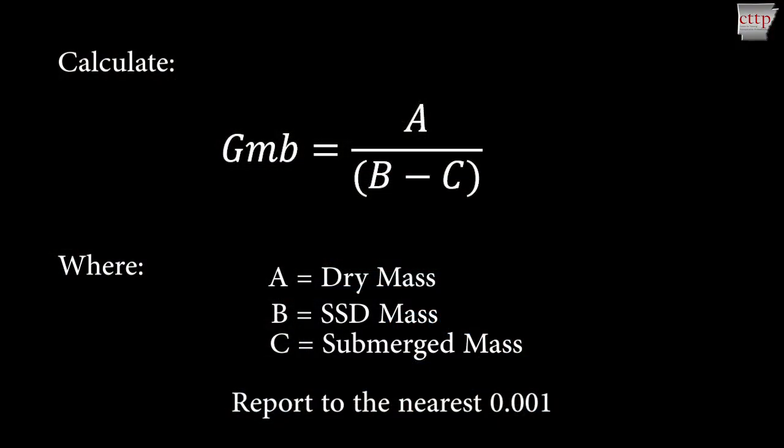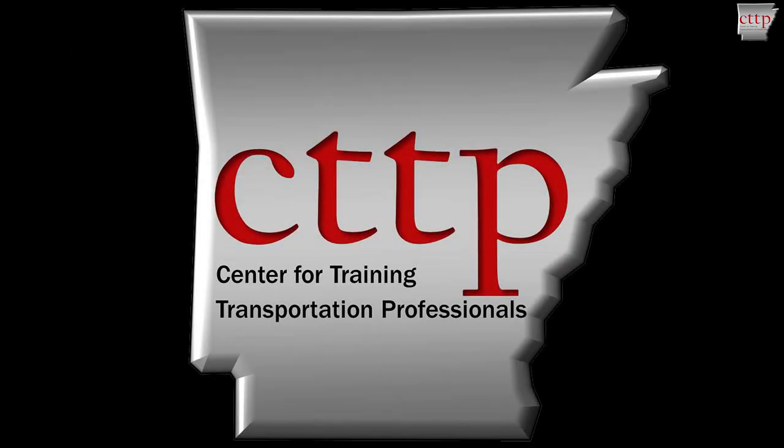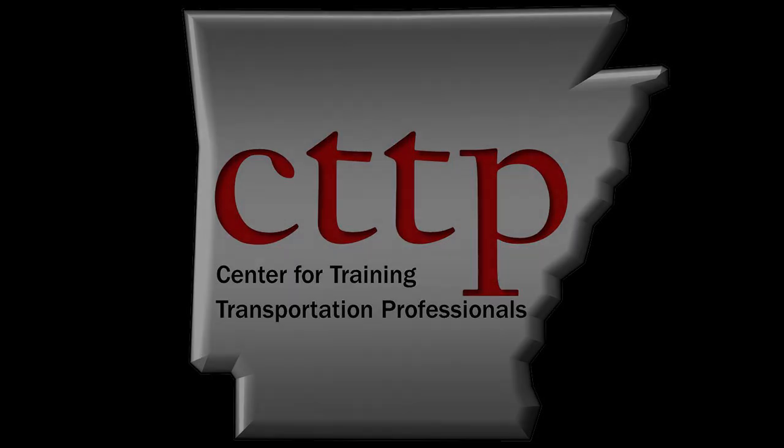Calculate the bulk specific gravity by dividing the dry mass by the difference between the SSD and submerged mass. Report this value to three decimal places. Please visit our website at cttp.org for other training videos and modules.